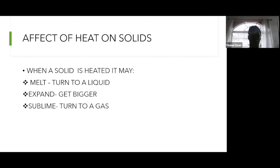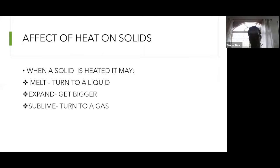Sublimation is the process when a solid is heated and turns directly to a gas. Not many solids go through this process. Solid carbon dioxide — called dry ice — is one example. When dry ice is heated it turns to a gas. You sometimes see this vapor-like smoke on stage in movies; they're using solid carbon dioxide.